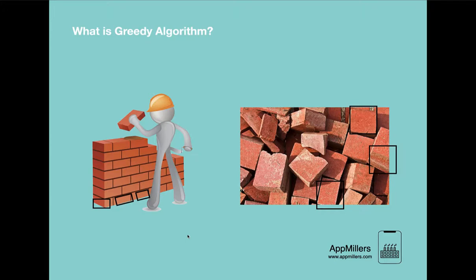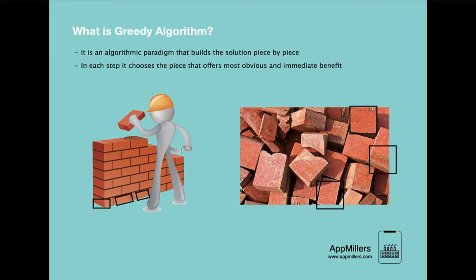Now let's look at the definition of a greedy algorithm. A greedy algorithm is an algorithmic paradigm that builds up a solution piece by piece — just as we built our wall brick by brick. The next important property is that it chooses the next piece that offers the most obvious and immediate benefit. In each step we take the best available option, which gives us an immediate and obvious benefit.